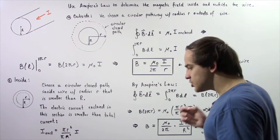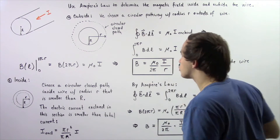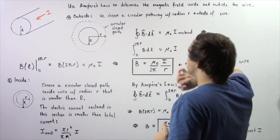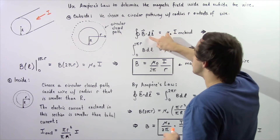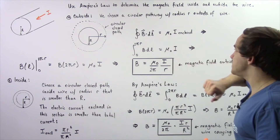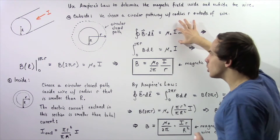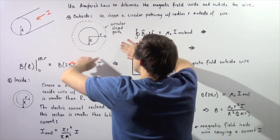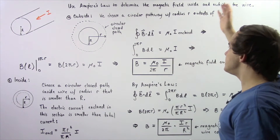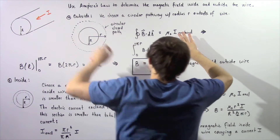Now we are ready to apply Ampere's law. Ampere's law states that the closed integral around this pathway of the dot product of our magnetic field B and infinitely small segment dL is equal to the product of the permeability of free space mu-naught and the enclosed electric current I that passes through the surface given by the circular closed pathway.